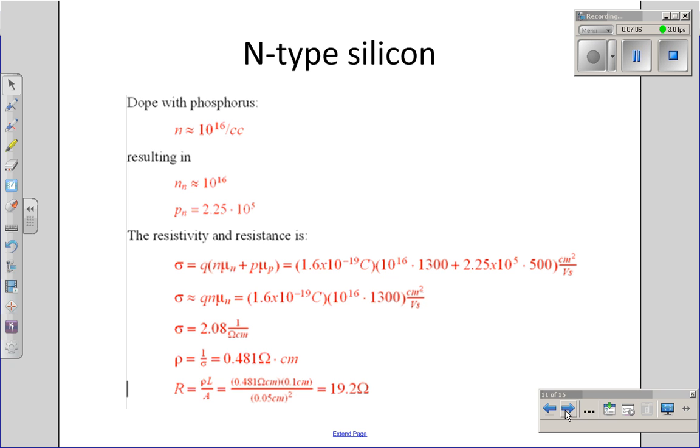If I dope the silicon with 10 to the 16th atoms of phosphorus per cubic centimeter, I'll have 10 to the 16th electrons per cubic centimeter, roughly. Roughly 10 to the 11th times bigger than the number of holes in the crystal. Likewise, almost all the charge carriers will be electrons. It behaves like an n-type material.